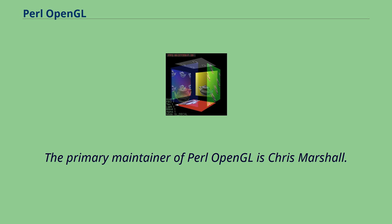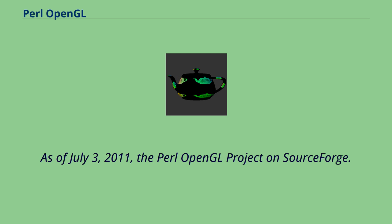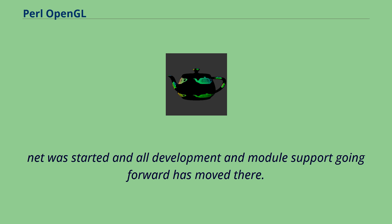The primary maintainer of Perl OpenGL is Chris Marshall. As of July 3, 2011, the Perl OpenGL project on SourceForge.net was started and all development and module support going forward has moved there.